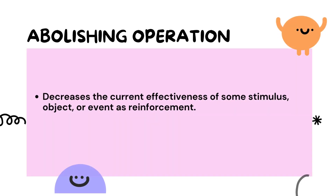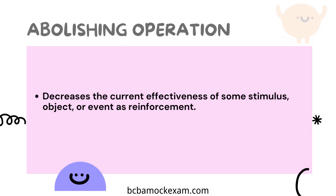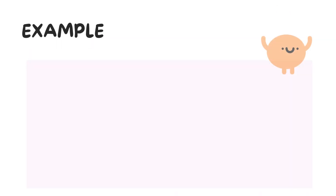An abolishing operation refers to a condition or circumstance that decreases the current effectiveness of a particular stimulus, object, or event as a reinforcement. In simple terms, an AO makes something less valuable or desirable to an individual, thereby reducing its potential as a reward for a desired behavior. Let's still use the example of Stephen.